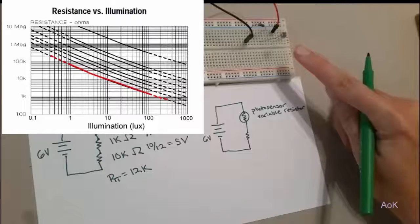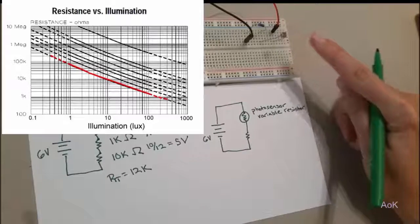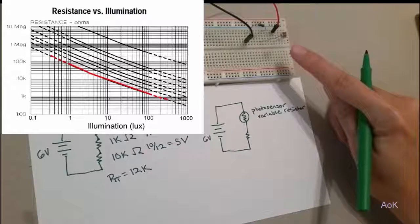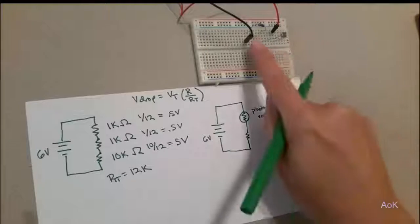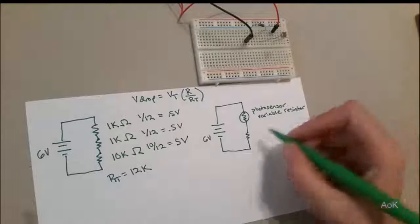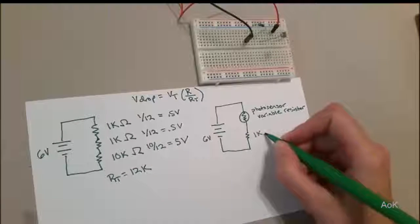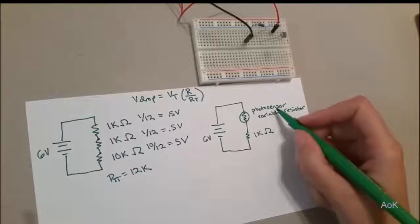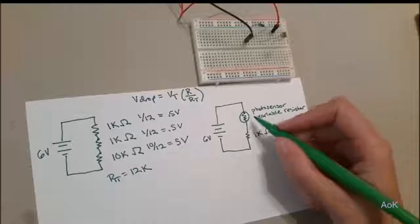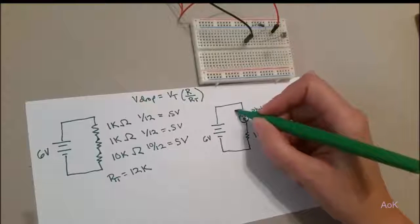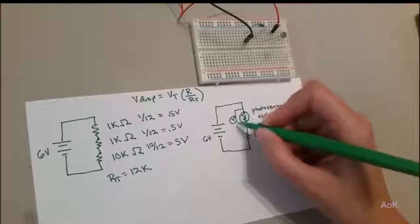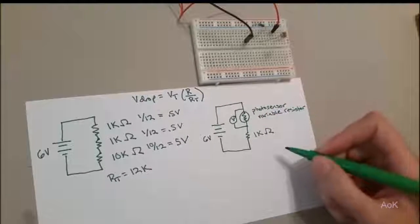In the case of our photosensor, the amount of light will either increase or decrease the amount of resistance in this resistor. Our second resistor in this circuit is going to be a 1k ohm. As the photosensor values change, the voltage drop across this particular resistor is also going to change.